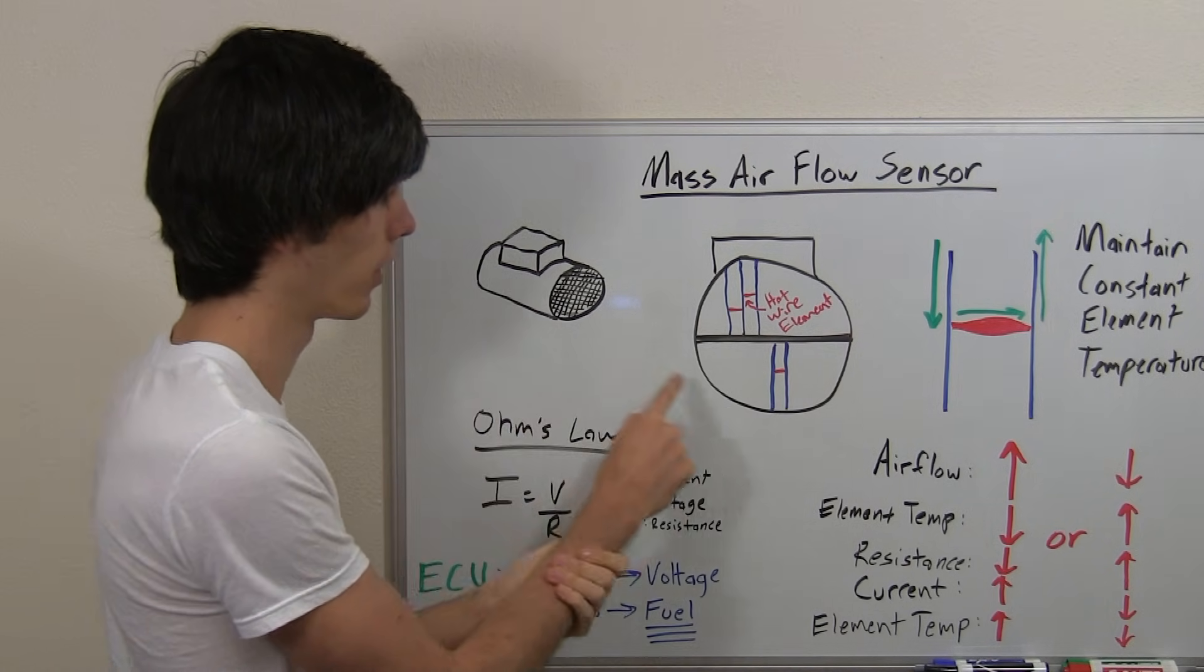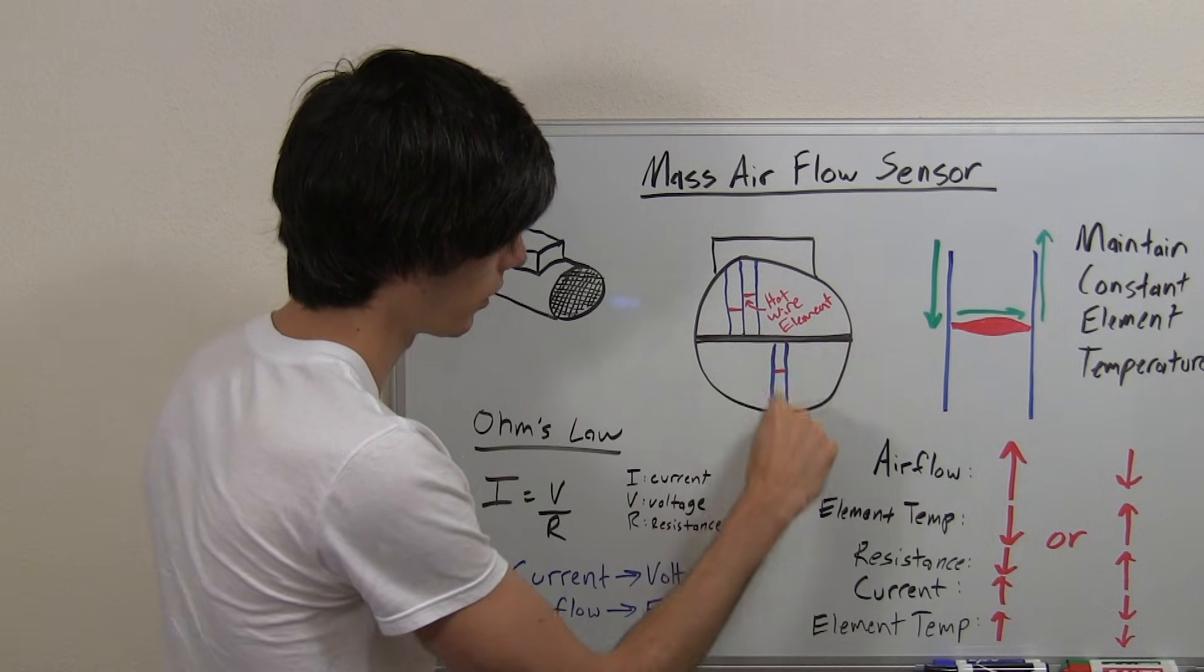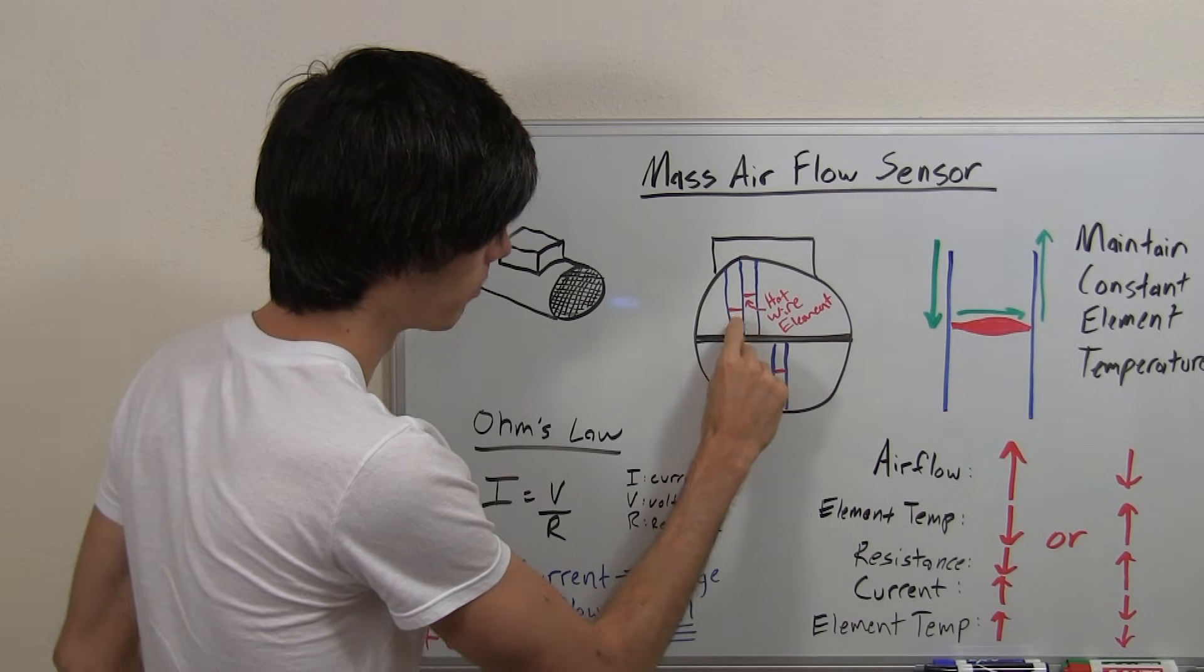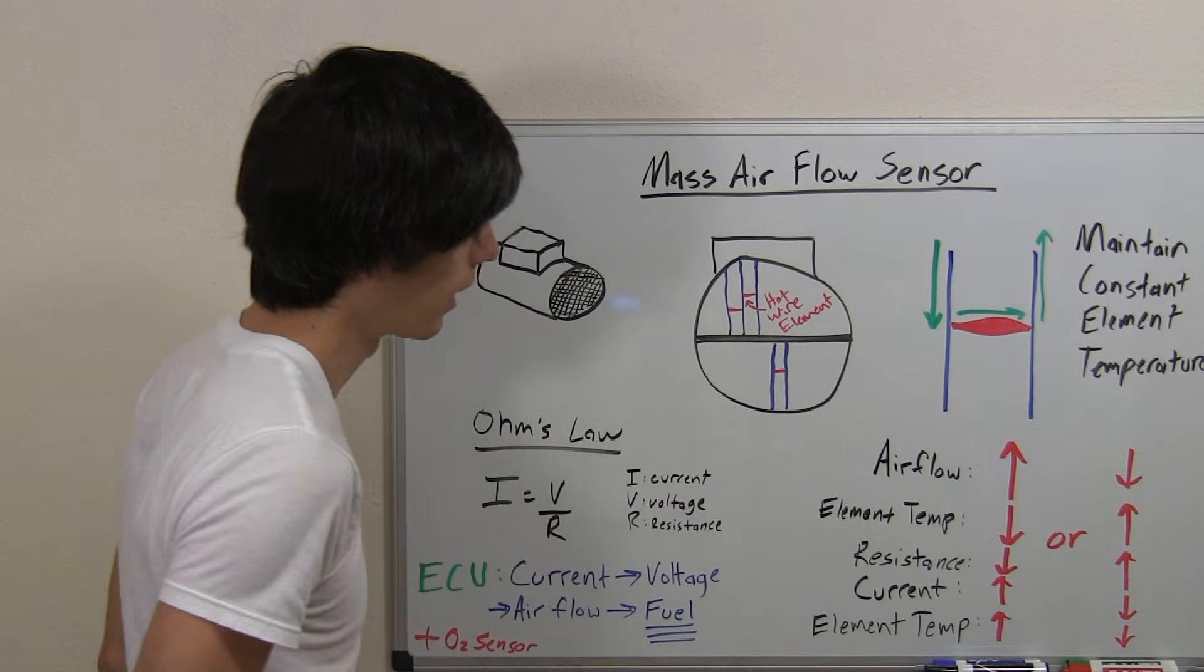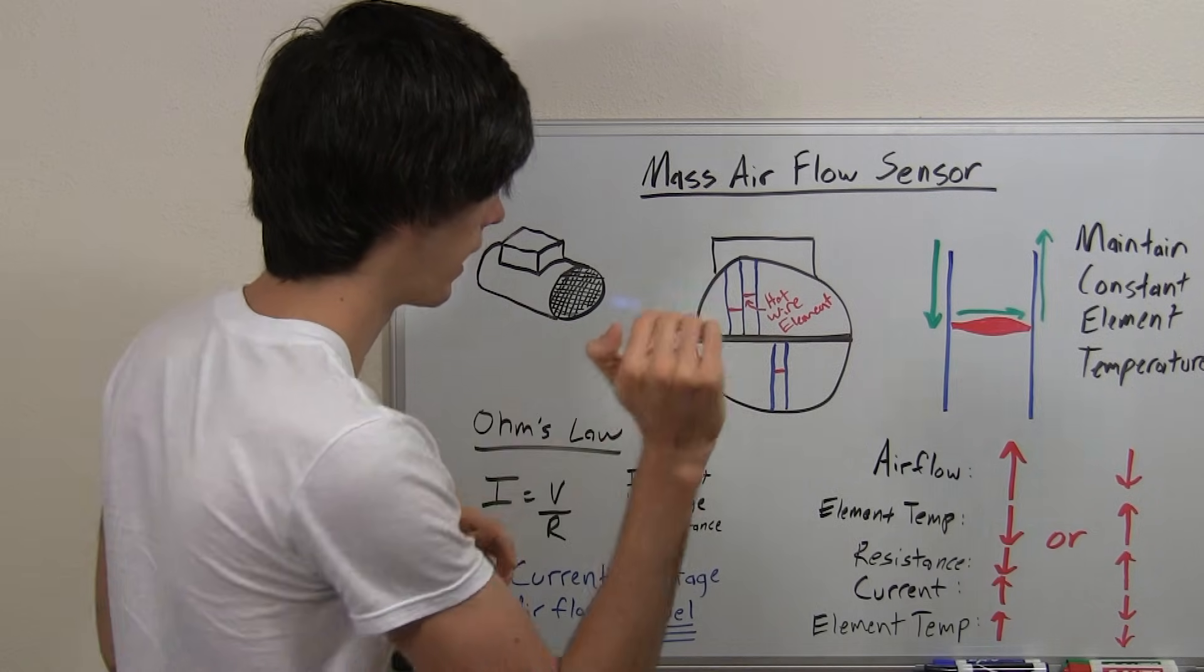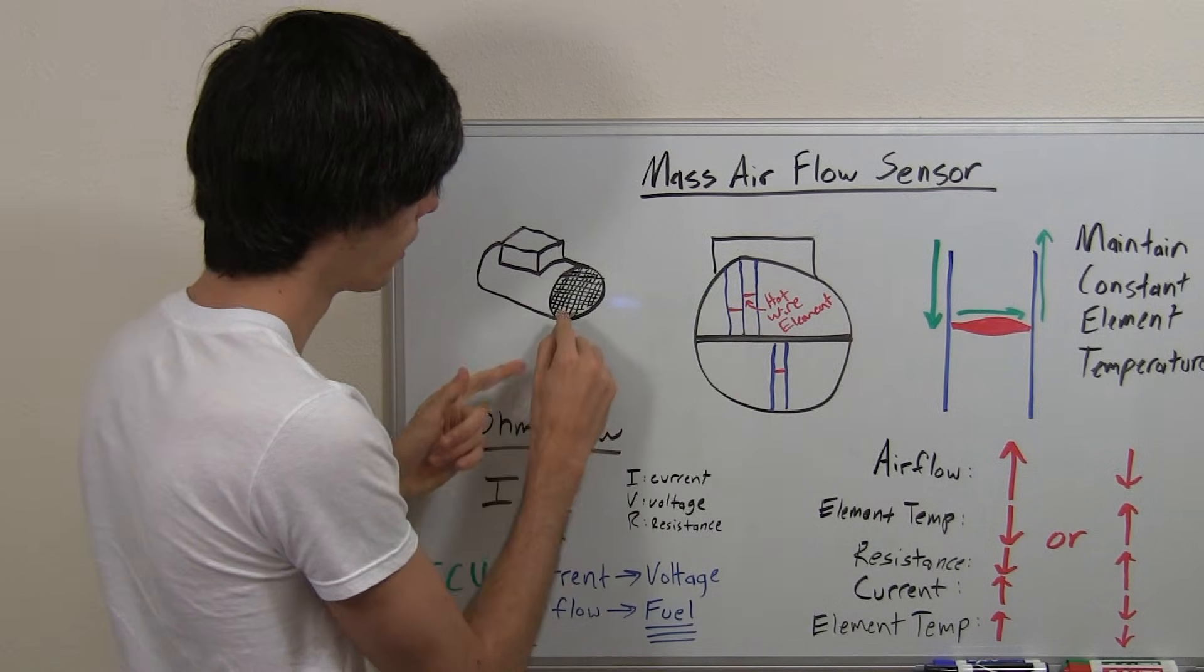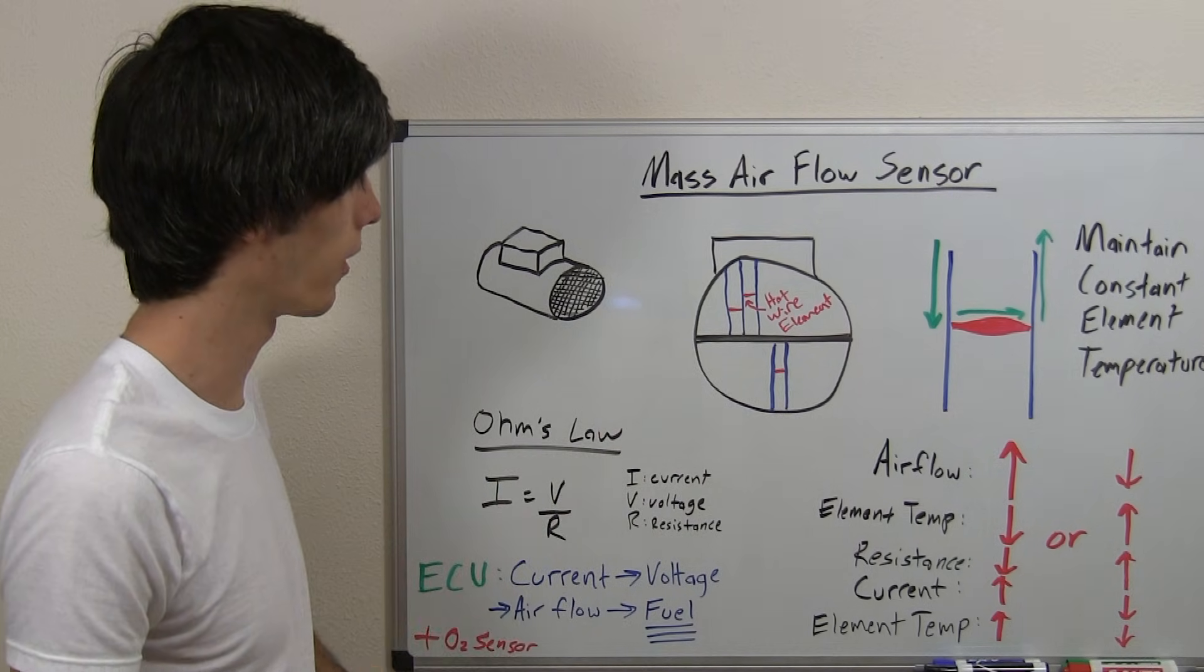Inside the mass airflow sensor, you've got these little circuits and between these wires we've got hot wire elements. We pass a current through these elements and air flows through this. There's a filter on the front so you don't have particles breaking these wires.